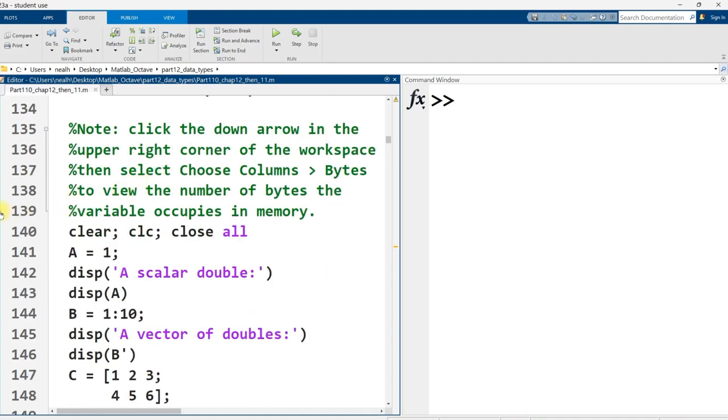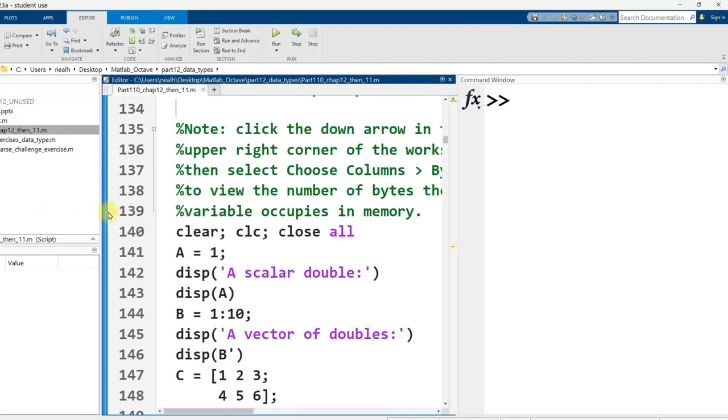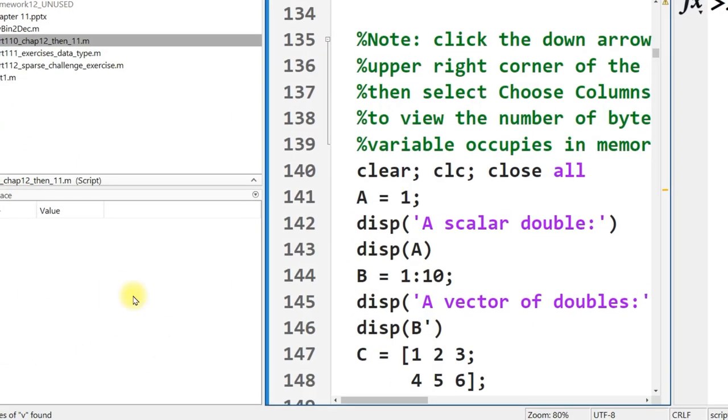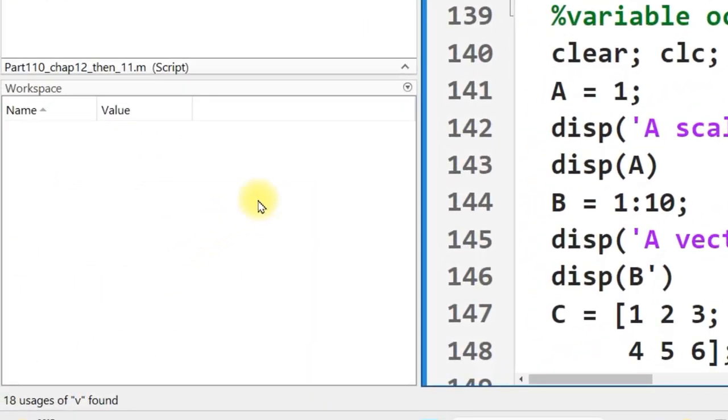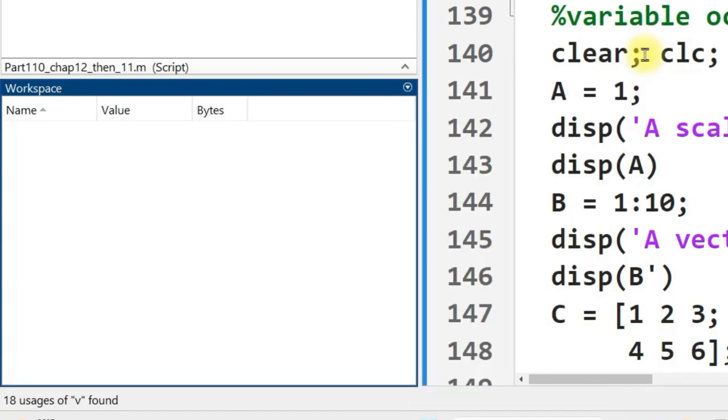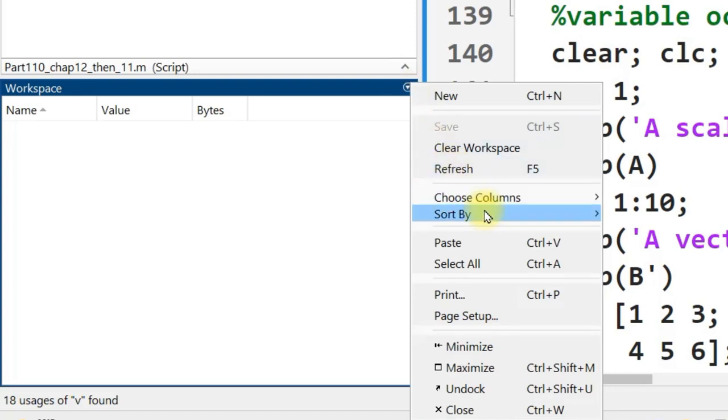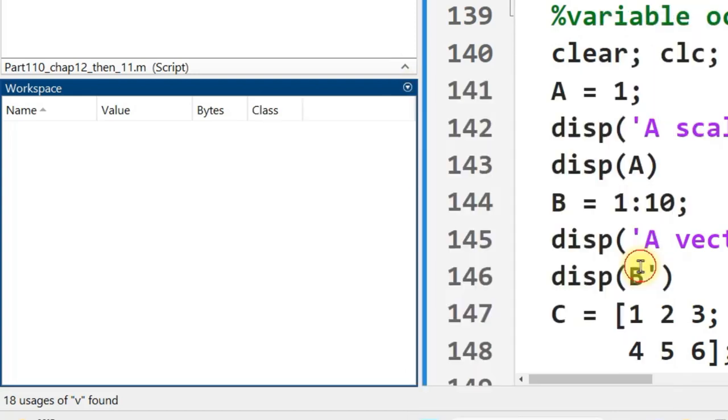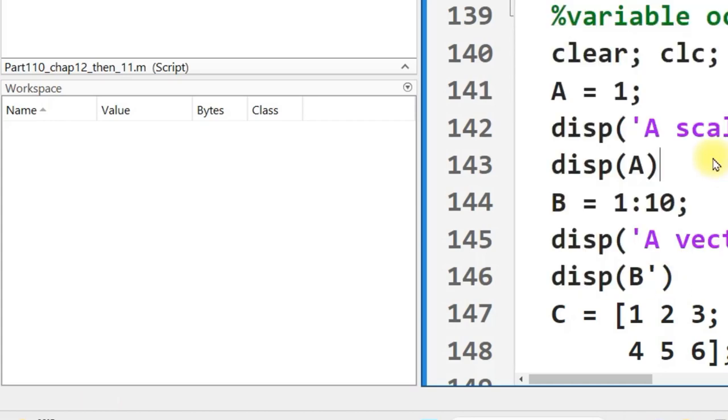Now, the first thing that we need to do is we need to set up our workspace so that we can see some information that maybe we wouldn't have paid attention to before. Unfortunately, I don't know how to make the font size of the workspace larger. So I'm just going to zoom in on it on the video and hope that's sufficient. But first, we want to click on this circle with a triangle in it. And we want to go to choose columns. And we want to select bytes and then go back to that and then also select class right here. And then when I run this first section, a variety of variables are going to be created.